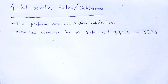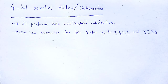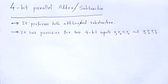We have already discussed about half adder and full adder, half subtractor and full subtractor. In these cases we are dealing with 1-bit addition and subtraction. But it is not always sufficient to add or subtract 1-bit data. To avoid that kind of problem, we discuss the 4-bit adder-cum-subtractor — one kind of arithmetic circuit which performs addition as well as subtraction of 4-bit numbers.